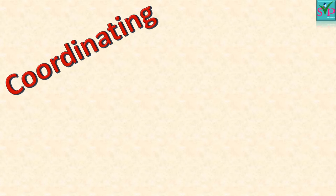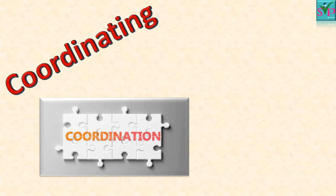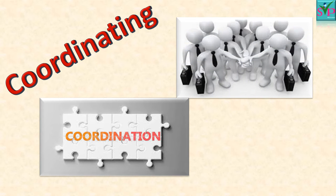The word coordination means to coordinate with each other. It is the act of arranging, putting things in a proper order, or making things run smoothly together. Coordination is the function of management which ensures that different departments and groups work together. As you can see in the image on screen, there are so many people joining hands to work in unity — they are all coordinating with each other to achieve the goal of the organization.